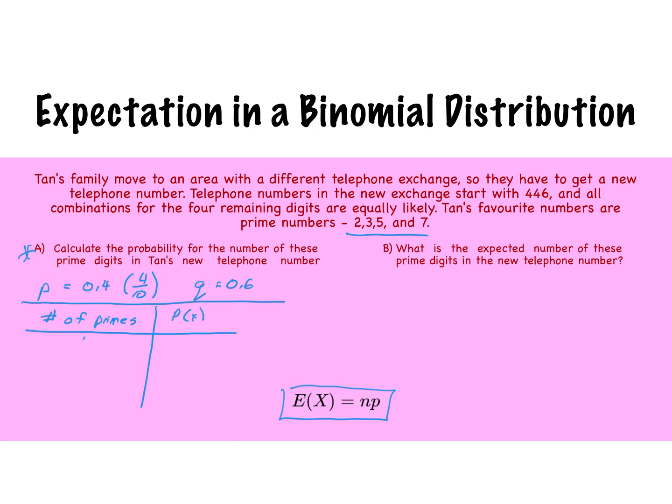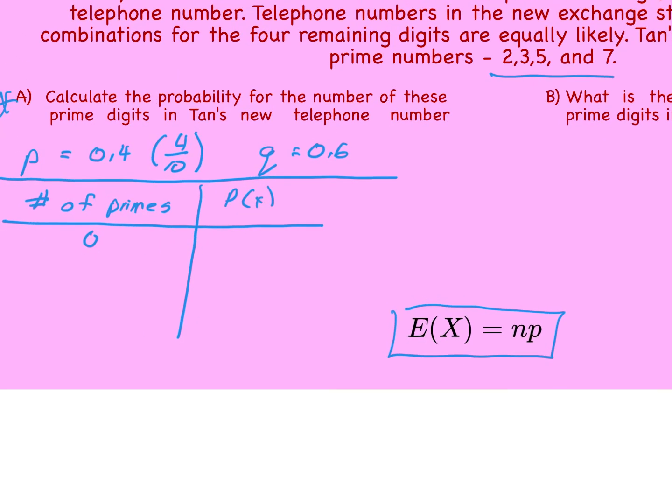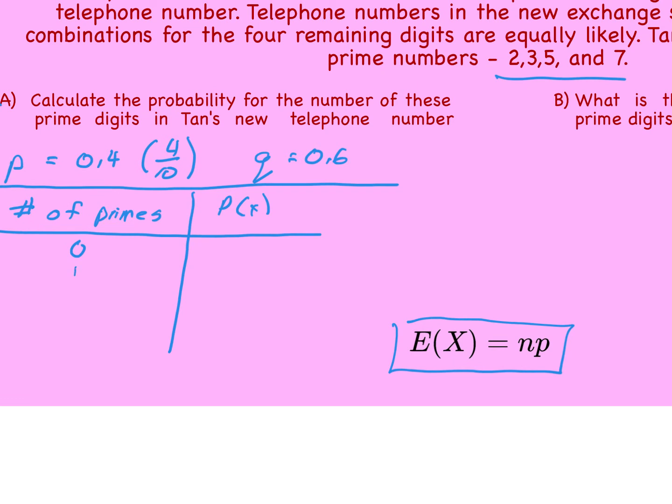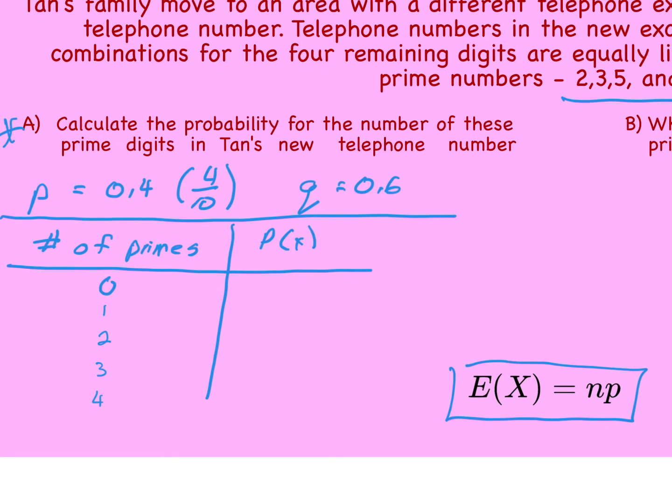So we could have 0 primes, 1 prime, 2 primes, 3 primes, or 4. So the probability of having no primes would be 4 choose 0, multiplied by success to the 0, and failure to the exponent of 4. And that's going to equal 0.1296.